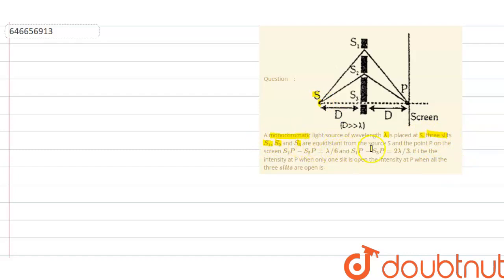are equidistant from the source S and the point P on the screen. S1P minus S2P is lambda by 6, and S1P minus S3P is 2 lambda by 3.